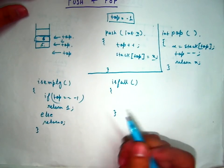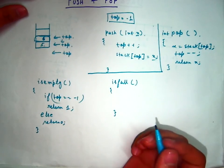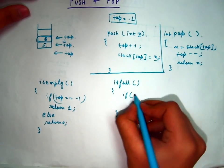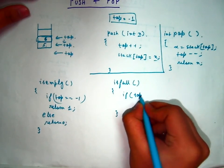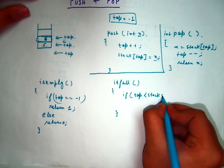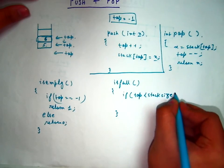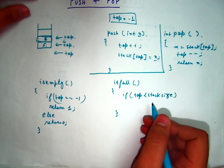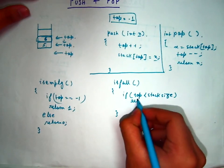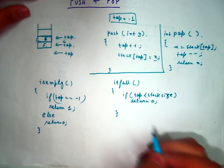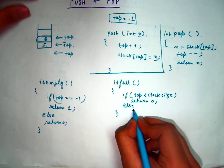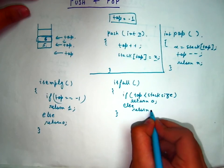So if top is less than stack size, then what? If top is less than stack size then obviously the stack is not full. So we return 0 in this condition. Else the stack is full, else return 1.